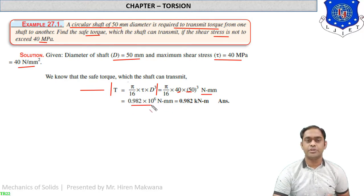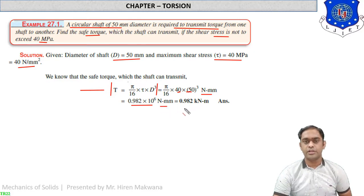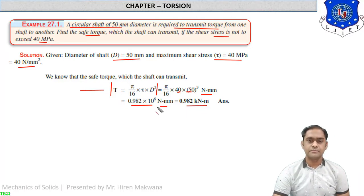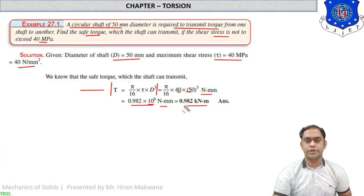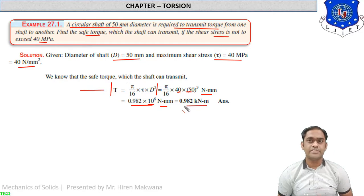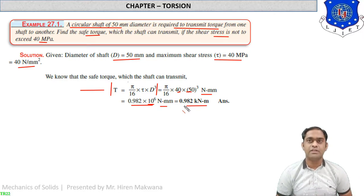You will get the answer as 0.982 × 10⁶ N·mm, which converts to 0.982 kN·m — using 10³ for kilonewton and 10³ for meter. This is a very simple numerical. This kind of problem can be asked in your GTU exam where given values are substituted and the missing value is found.